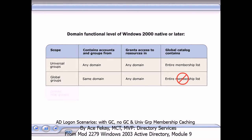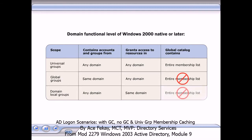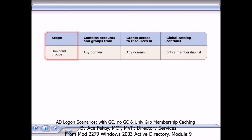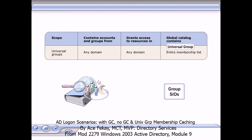Members in domain local groups can be accounts or groups from any domain. However, domain local groups can only provide access to resources in the domain in which the group is created. The global catalog does not contain the entire membership list for domain local groups. Because in a universal group, the membership and resources are not necessarily from the user's logon domain, and the membership is stored in the global catalog, the global catalog must be available to ensure that the universal groups that the user is a member of are included in the user's list of SIDs.